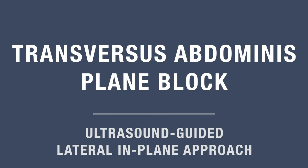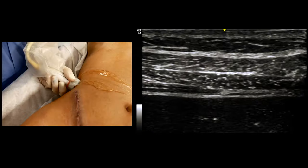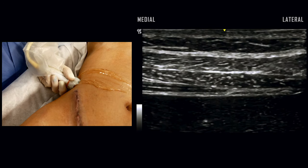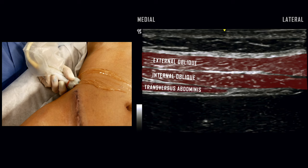The patient is positioned supine with the transducer at the midaxillary line between the subcostal margin and iliac crest. Three distinct layers of abdominal wall muscles are seen, including the external oblique, internal oblique, and transversus abdominis.